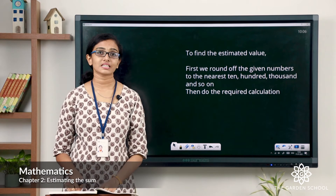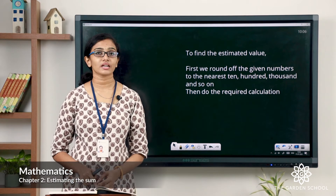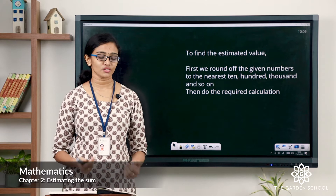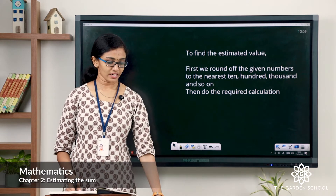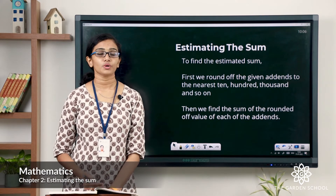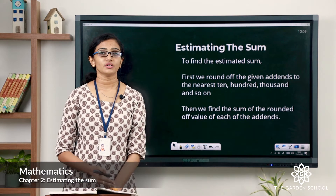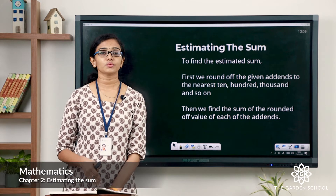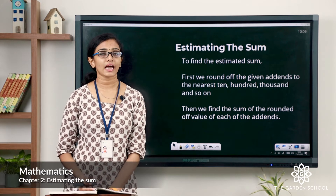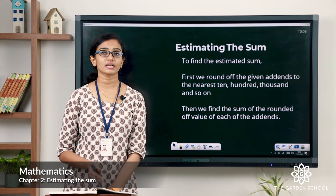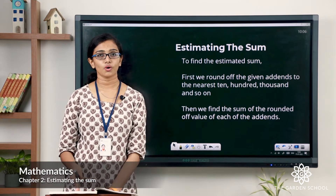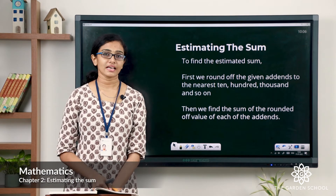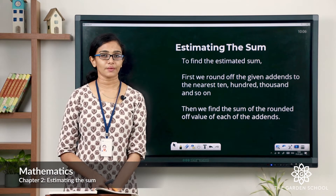Let's discuss how to find the estimated sum of an addition problem today. To find the estimate of a sum, you are given the addends in the question and you have to round off the given addends to the nearest 10, 100, or so on, and then do the addition to get the estimated sum.